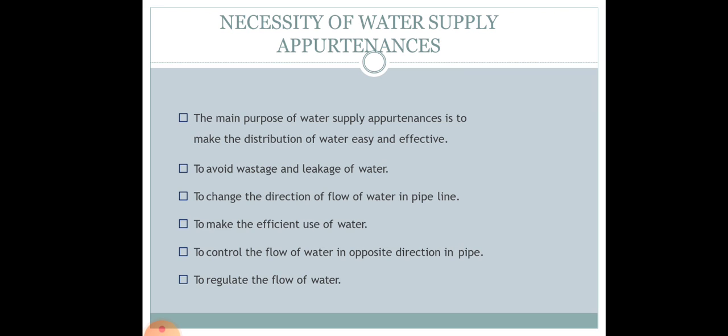When it comes to the necessities, the main purpose of water supply appurtenances is to make the distribution of water effective. The flow of water should be easy and effective, and it should also avoid the wastage of water due to any leakages or breakages in the distribution network. So the main purpose of providing appurtenances is to prevent the leakage or loss of water.